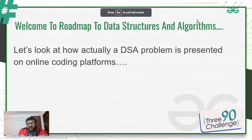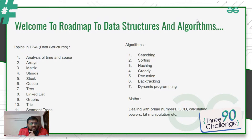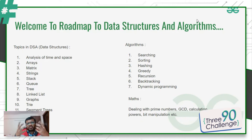These are the important DSA topics for placements: analysis of time and space complexity, arrays, matrices, strings, stack, queue, tree, linked list, graph, trie, segment trees, disjoint sets — these are the data structures. Algorithms include searching, sorting, hashing, recursion, backtracking, dynamic programming, and maths algorithms. This is just an overview; for example, in graphs you will have specific graph algorithms as well.